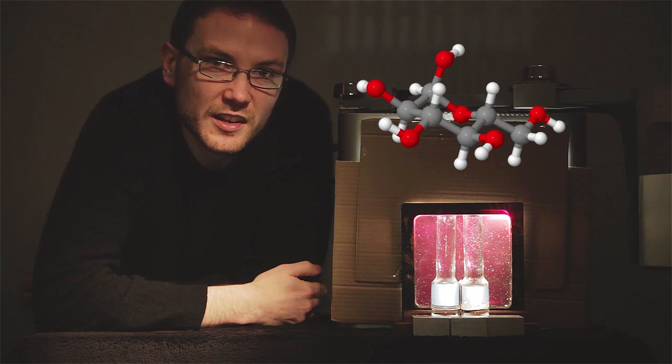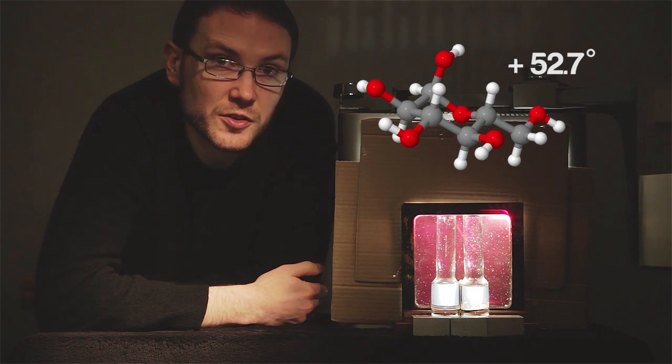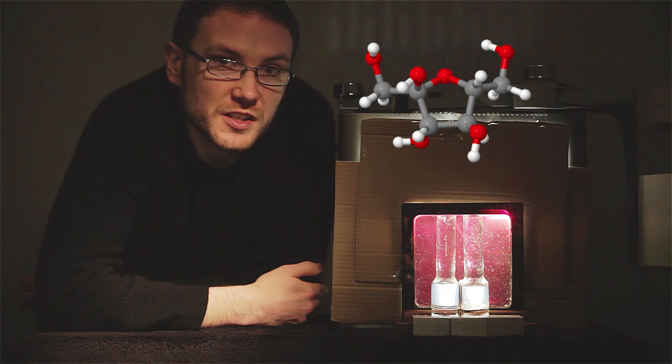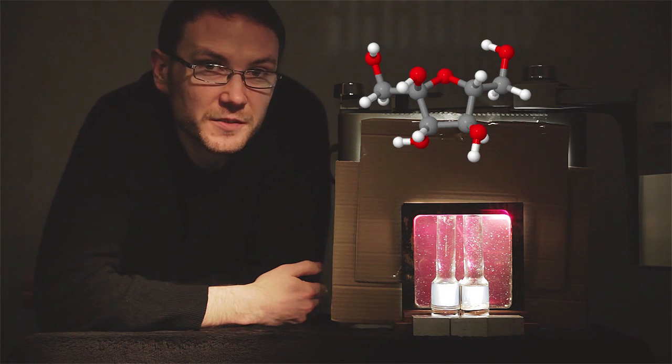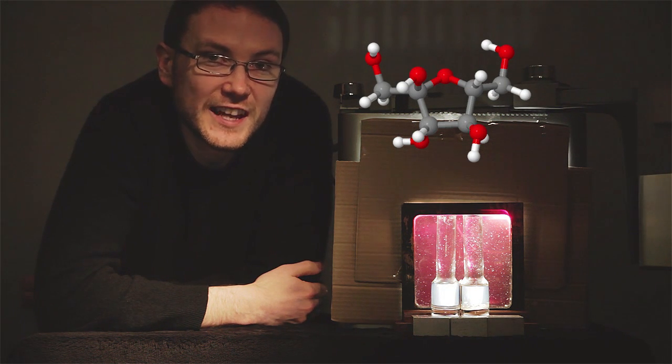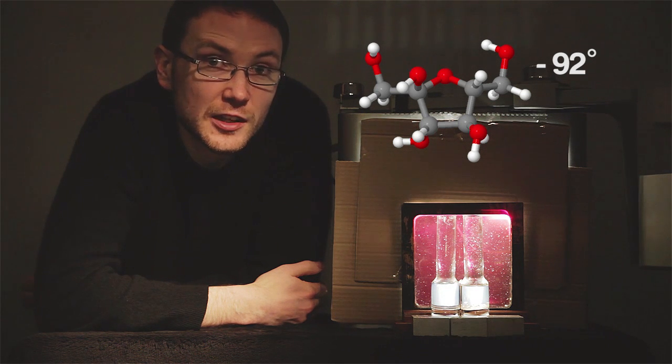Glucose rotates light to the right, hence also being known as dextrose. Fructose, which is sold in supermarkets as fruit sugar, rotates light strongly to the left, and is also lesser known as levulose.